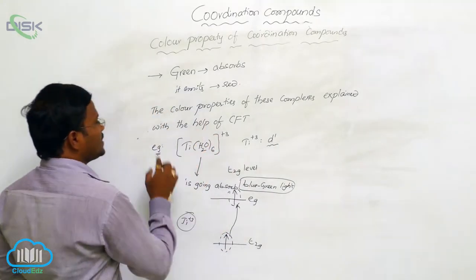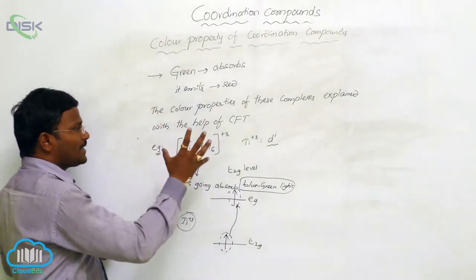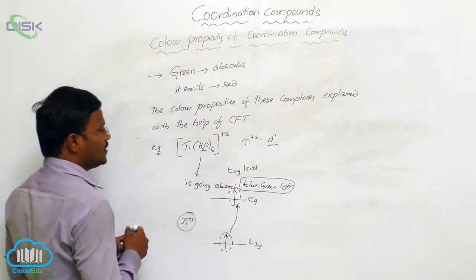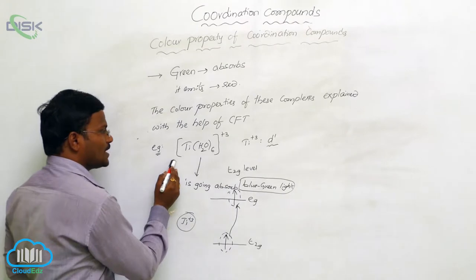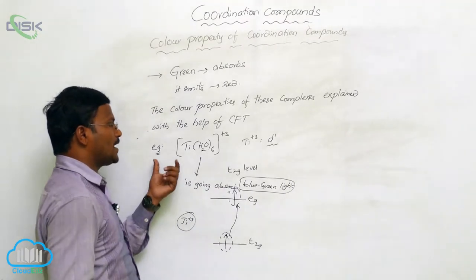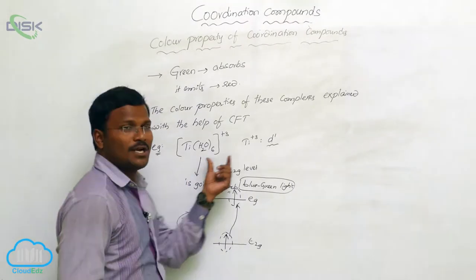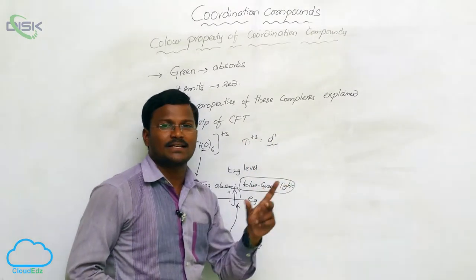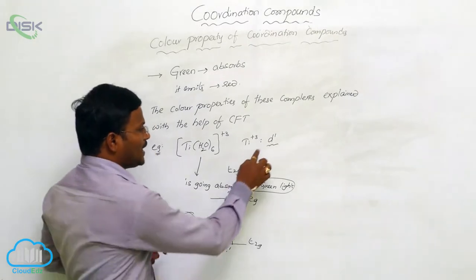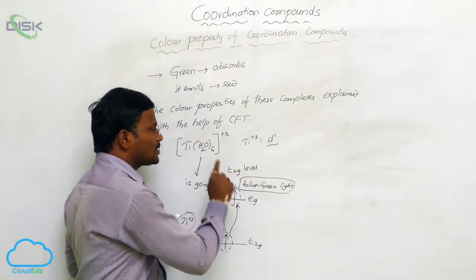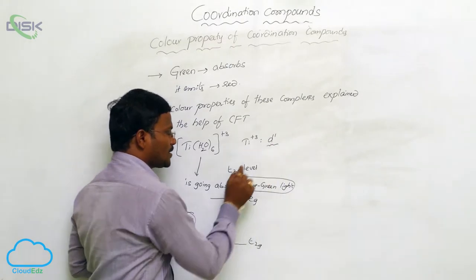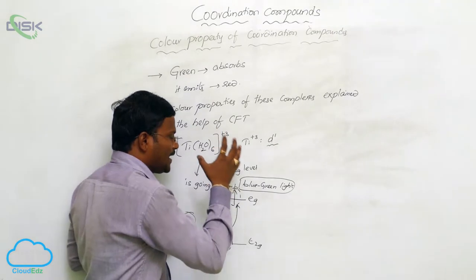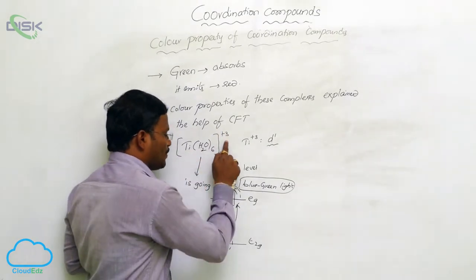Let us consider color properties of coordination compounds explained with the help of crystal field theory. I would like to consider one example: hexa aqua titanium three plus complex, in which titanium oxidation state is plus three with one electron present in its d orbital. One electron is always present at t2g level due to octahedral geometry.